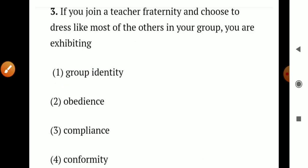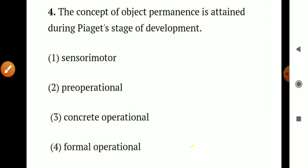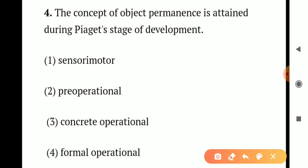Question number 4. The concept of object permanence is attained between which stage of development: Option 1 - sensory motor. Option 2 - preoperational. Option 3 - concrete operational. Option 4 - formal operational. Piaget's stages of development include sensory motor, preoperational, concrete operational, and formal operational. The object permanence concept occurs in the sensory motor stage. So the correct answer is Option 1 - sensory motor stage.